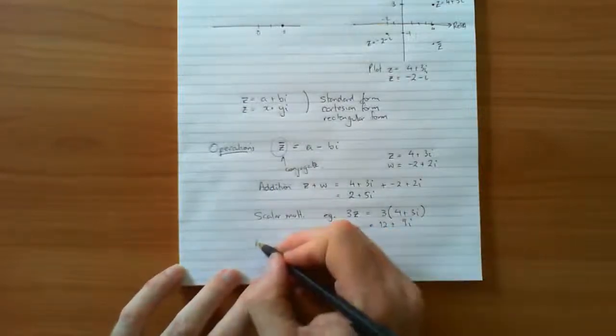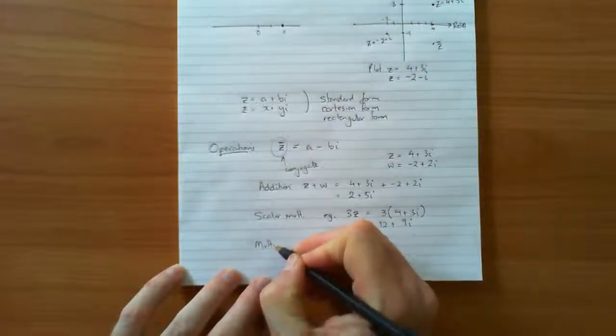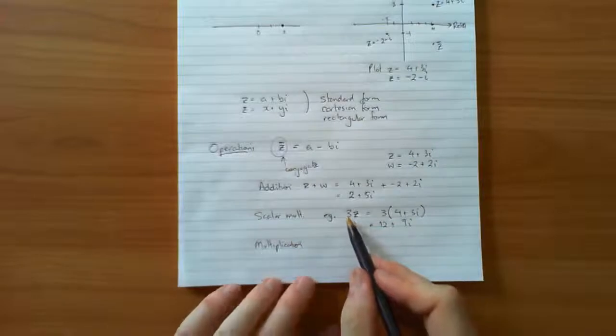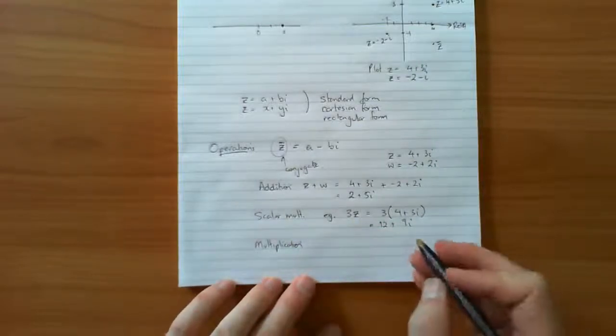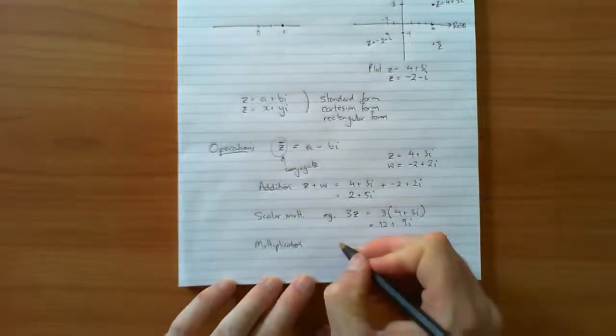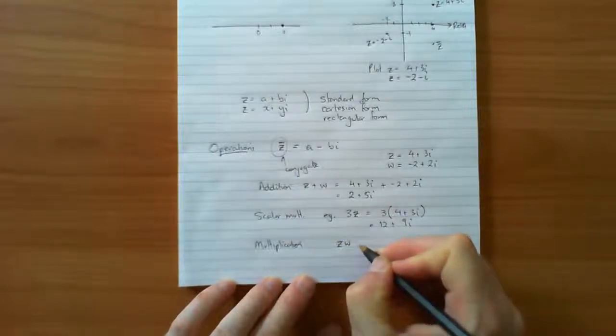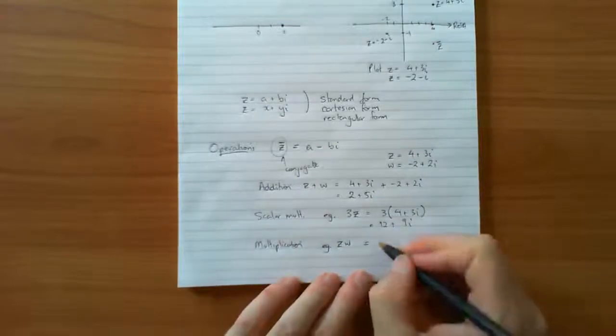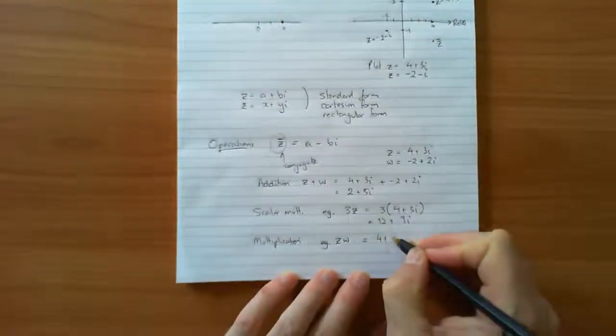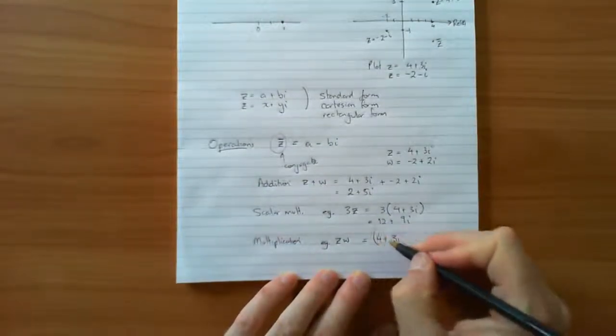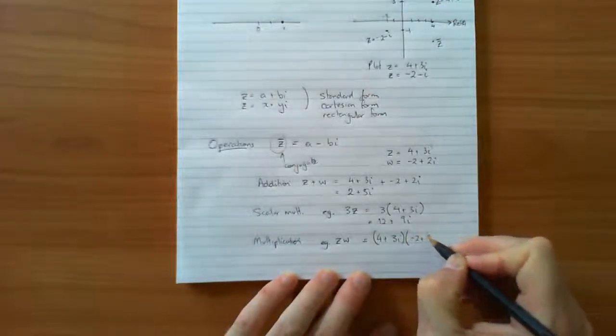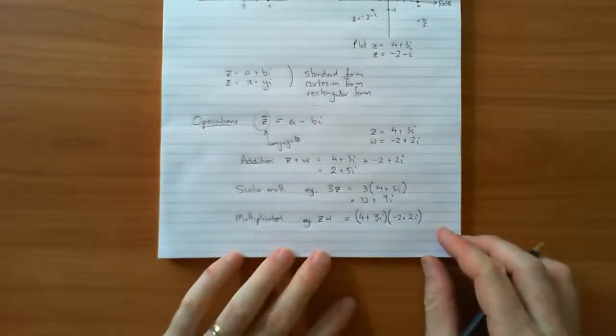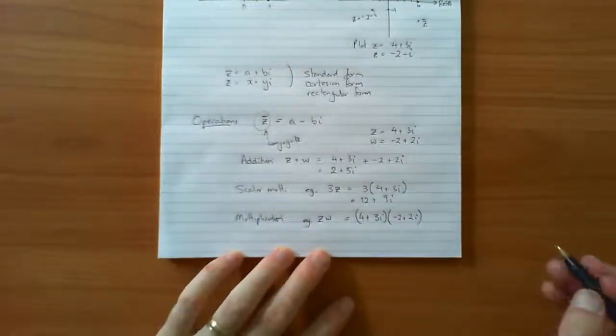Next thing we'll look at is actually multiplying the complex numbers together. So this was just a scalar multiplied by a complex number. Let's consider multiplying 2 together. In other words, let's try z times w. Z times w will be 4 plus 3i multiply by w, negative 2 plus 2i. So we treat this just like we would algebra, distributive law, expanding out two brackets.